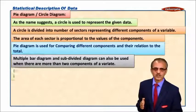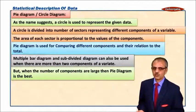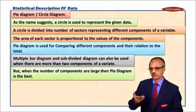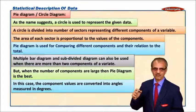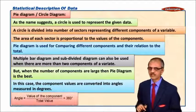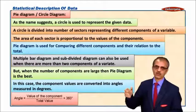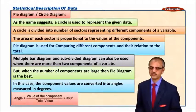Multiple bar diagram can also be used, but the pie diagram is better when more than two variables are there, when more than two components are there. In this case the component values are conveniently converted into angles measured in degrees. What is the formula for that? Angle is value of component upon total value into 360 degrees.